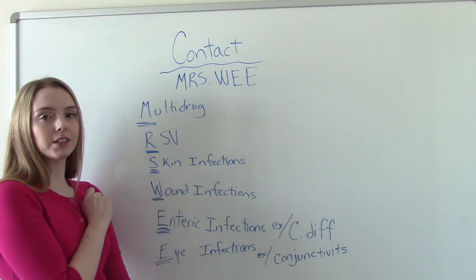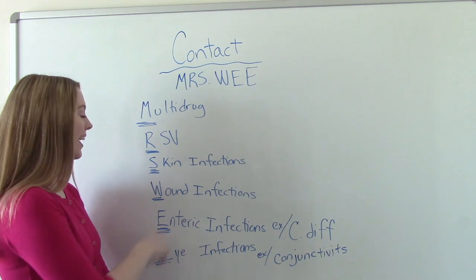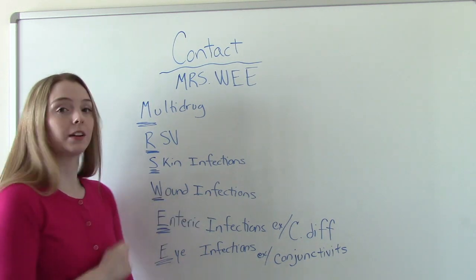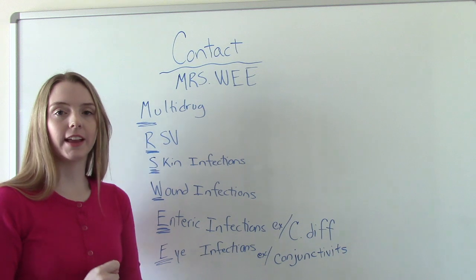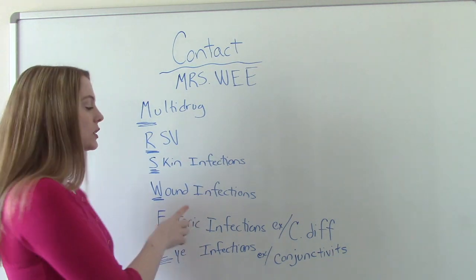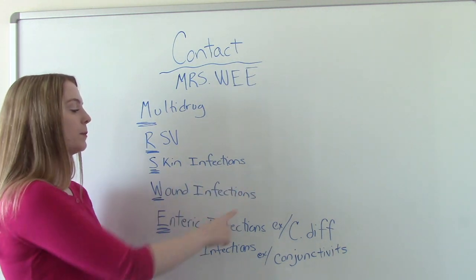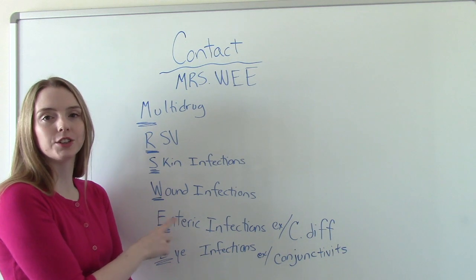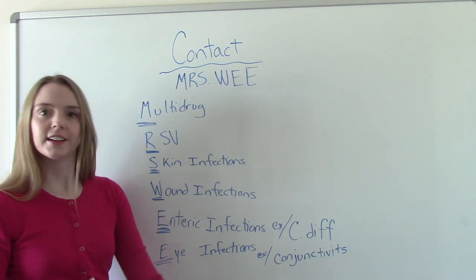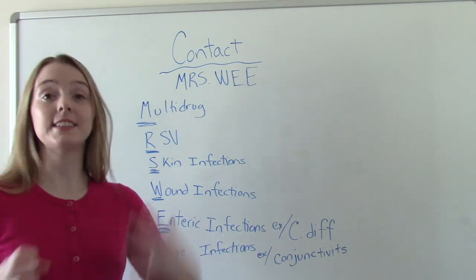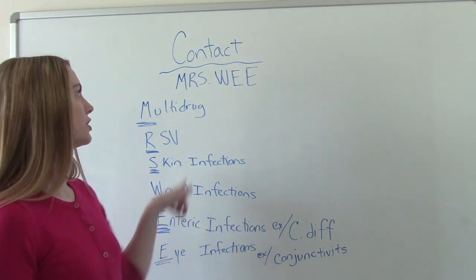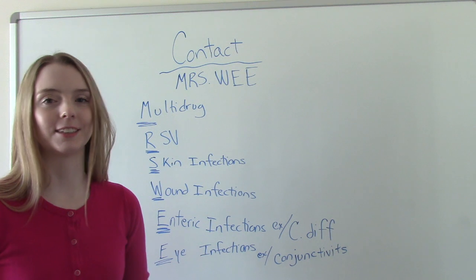S is for skin infections — that's pretty self-explanatory. W is for wound infections. If you're in fundamentals and your first clinicals are in an assisted living or nursing home setting, this is where you're going to find most of your contact isolation patients, because of wound infections — things like stage three and stage four pressure ulcers. Those wound infections will put you on contact isolation.